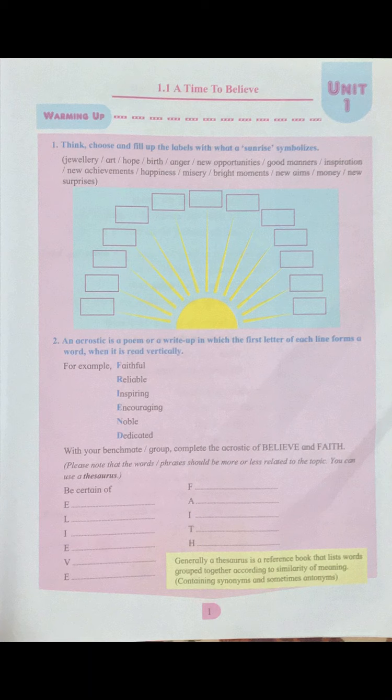In this exercise, certain words are given and we have to identify whether these words symbolize sunrise or not. The first word is jewelry — yes, it symbolizes sunrise. Art — yes. Hope — of course, yes. Birth — when someone is born, it is a good thing, so yes. Anger — no, it doesn't symbolize sunrise. New opportunities — yes. Good manners — yes. Inspiration — yes. New achievements — yes. Happiness — yes. Misery — no. Bright moments — yes. New aims — yes. Money — yes. And new surprises — of course, everybody likes surprises, so that is also a big yes.